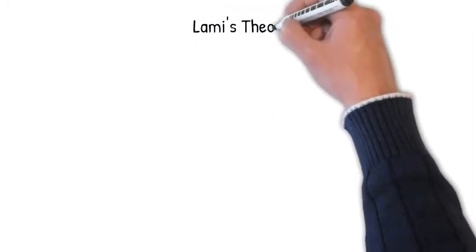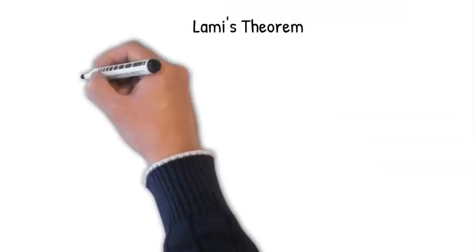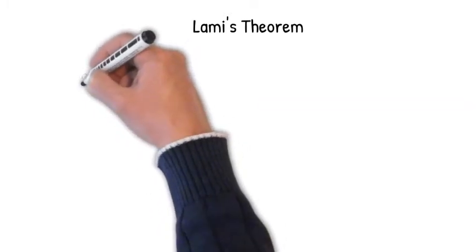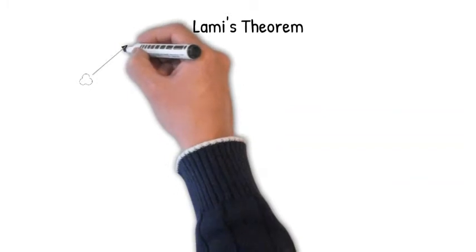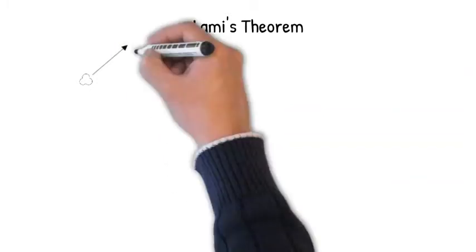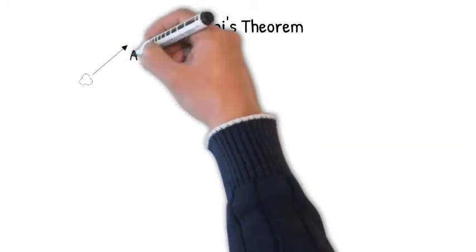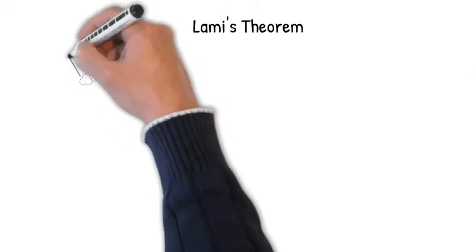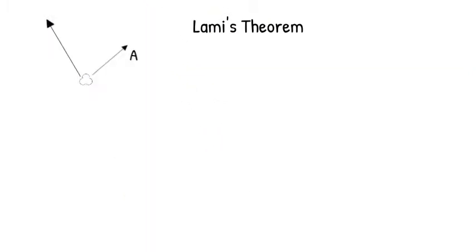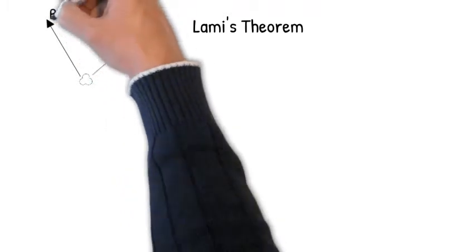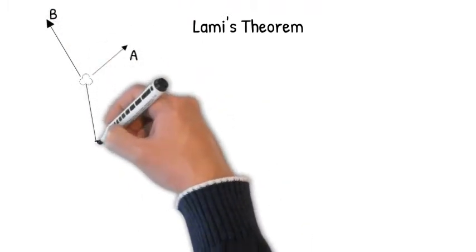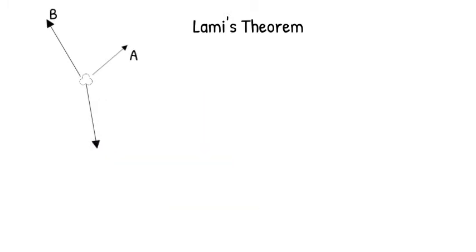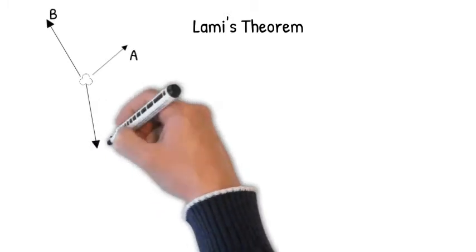Welcome all, let's talk about Lami's theorem. It discusses one body and three forces applied on the body. Consider a body with force A applied as the first force, then the second force B, and a third force called C. After the application of these three forces, the body is in equilibrium.